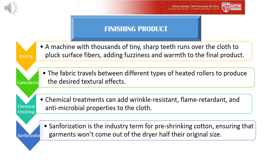Continuing the third phase is finishing, where a number of mechanical and chemical techniques are applied to achieve the desired texture and properties. Raising uses a machine with thousands of tiny sharp teeth to pluck surface fibers, adding fuzziness and warmth. Calendaring uses heated rollers to produce desired textural effects. Chemical finishing adds treatments such as wrinkle resistance, flame retardant, and antimicrobial properties. Finally, sanforization is the industry term for pre-shrinking cotton, ensuring garments won't shrink after washing.